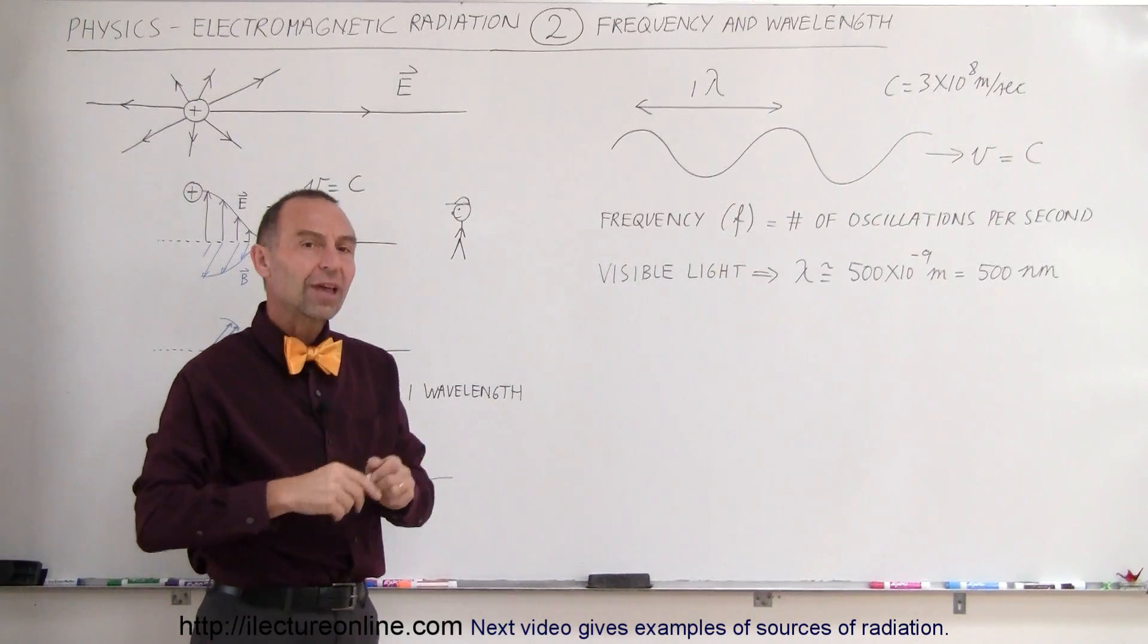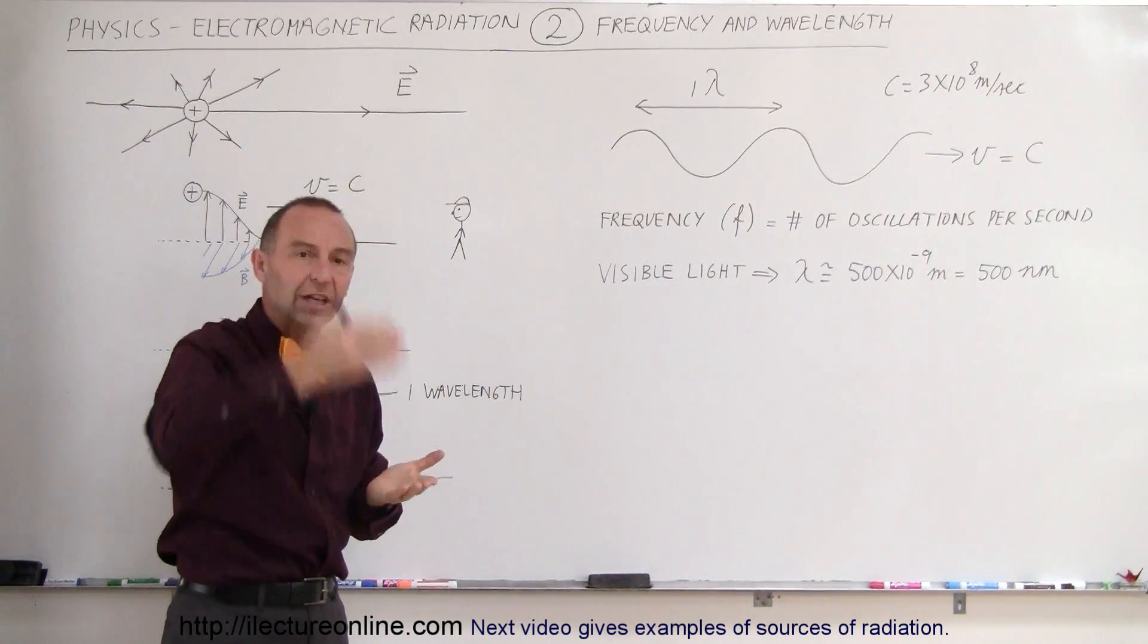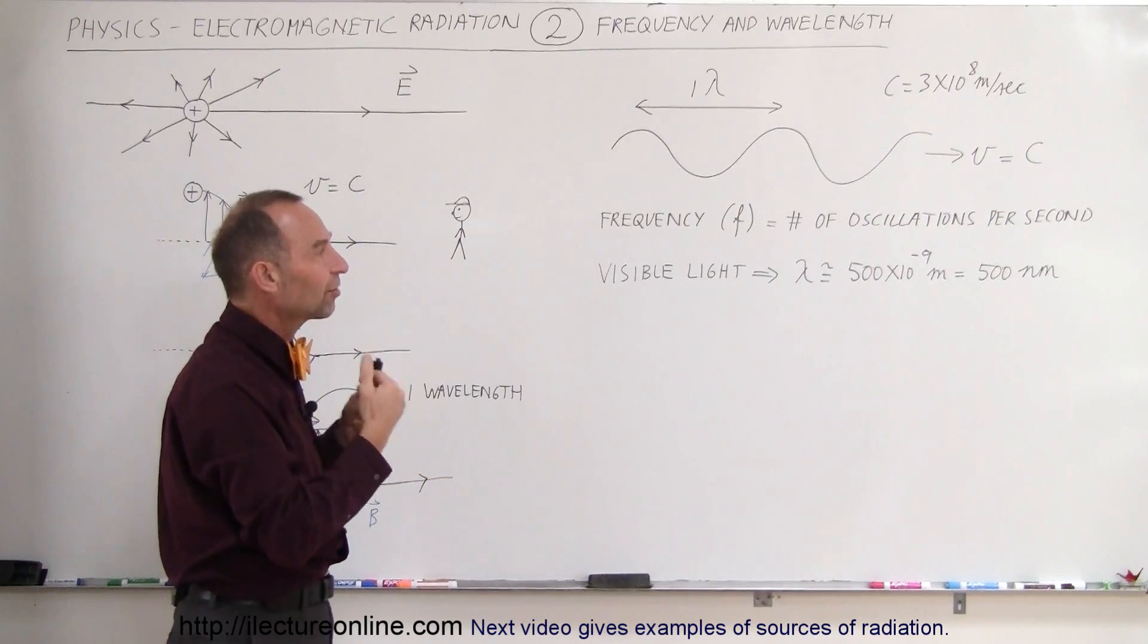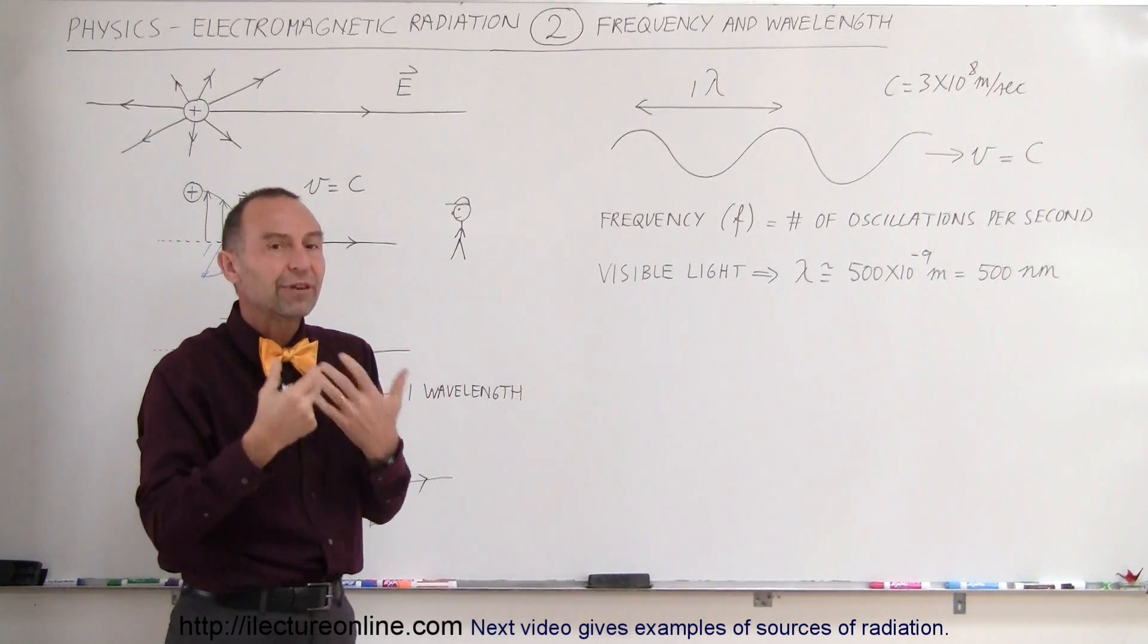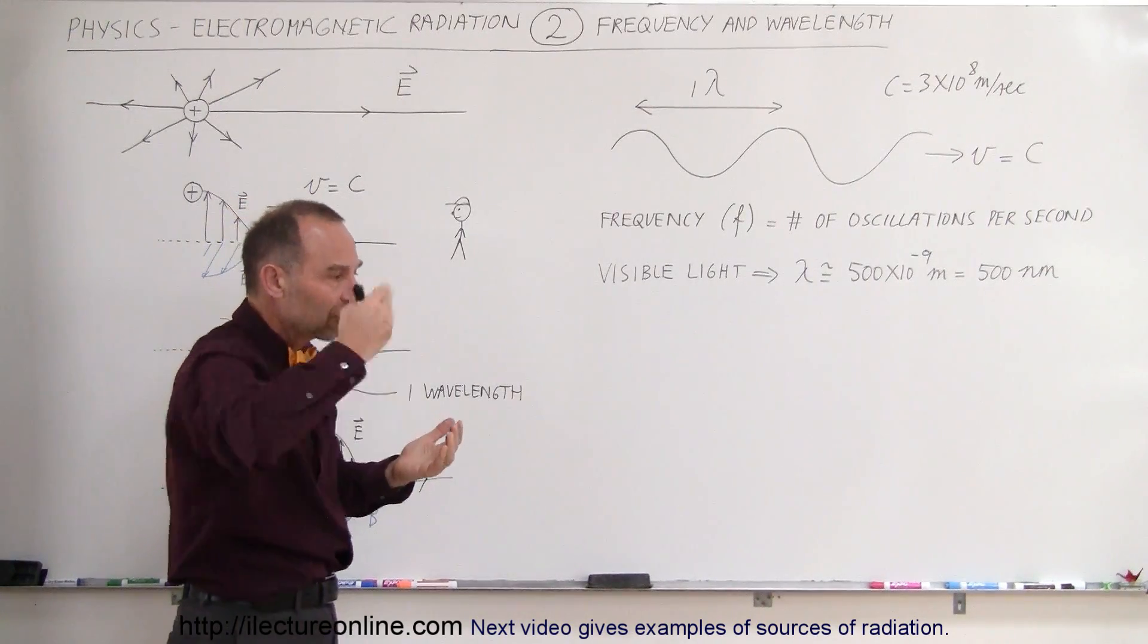And waves also have what we call frequency, the rate at which the oscillations go up and down. So, the number of oscillations per second is called the frequency, how fast the oscillations occur.